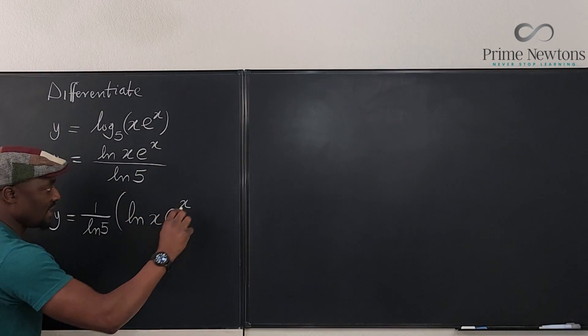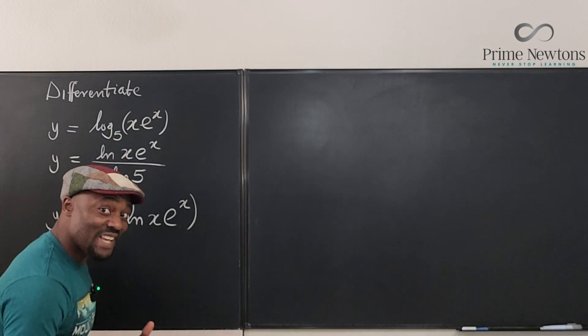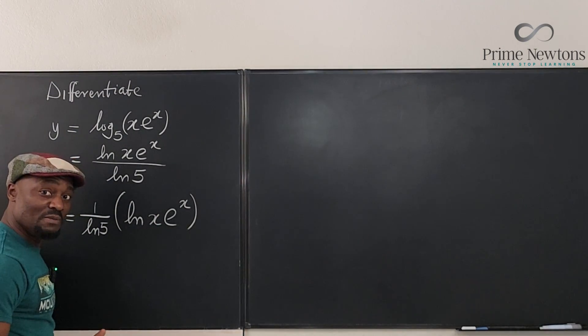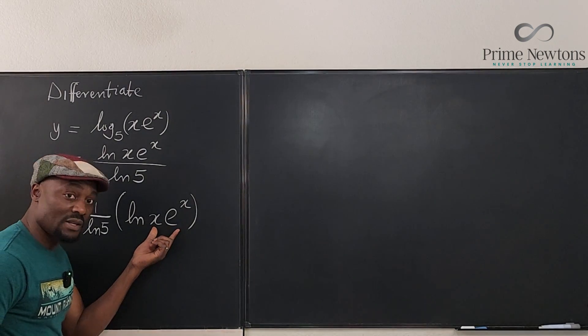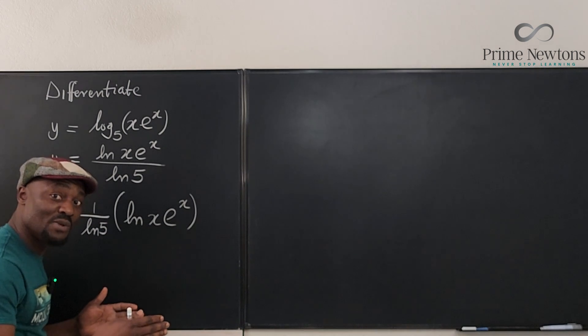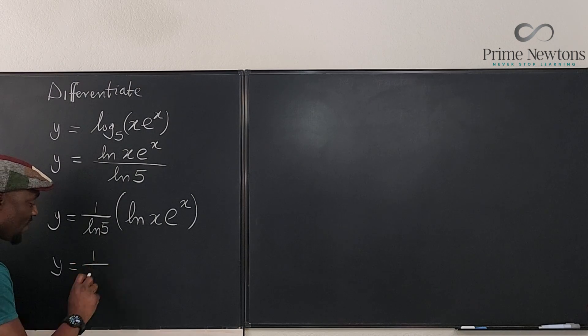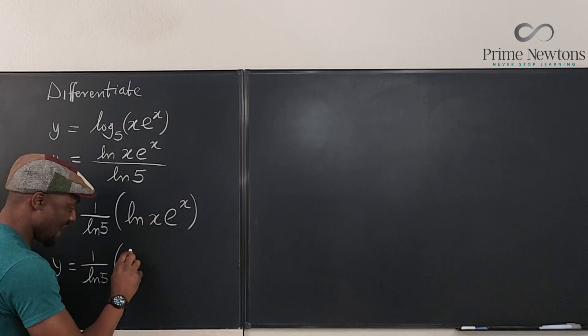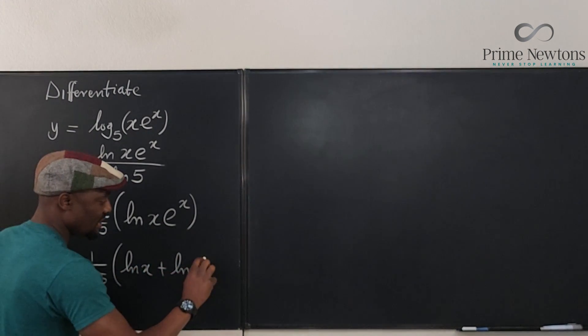So your focus will now have to be on this. And something again shows up. Remember, the laws of logarithms that says, one law of logarithm that says, when you have a product as the argument, you can split the argument into a sum of two logarithms. So what we have is y will be equal to one over natural log of five times, I can write this as ln of x plus ln of e to the x.